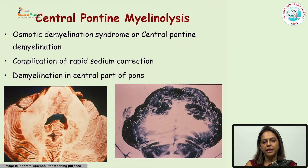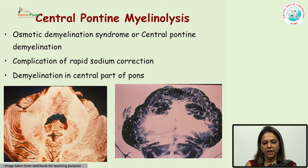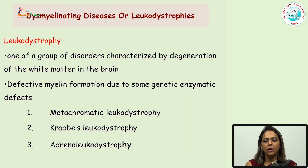Another cause of demyelination is central pontine myelinosis. This is a very distinct disease which occurs as a complication of rapid sodium correction, and the demyelination dominantly occurs in the central part of the pons. It mostly occurs whenever there is osmotic correction.